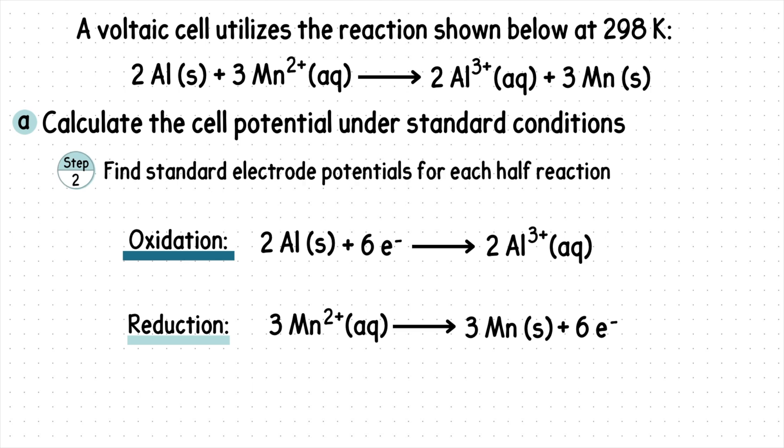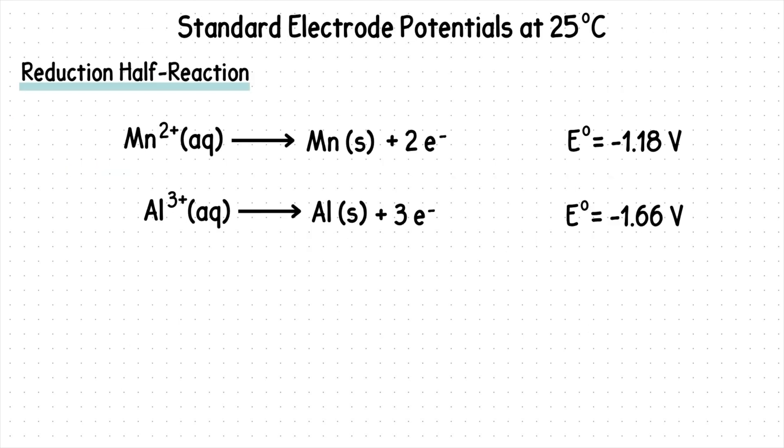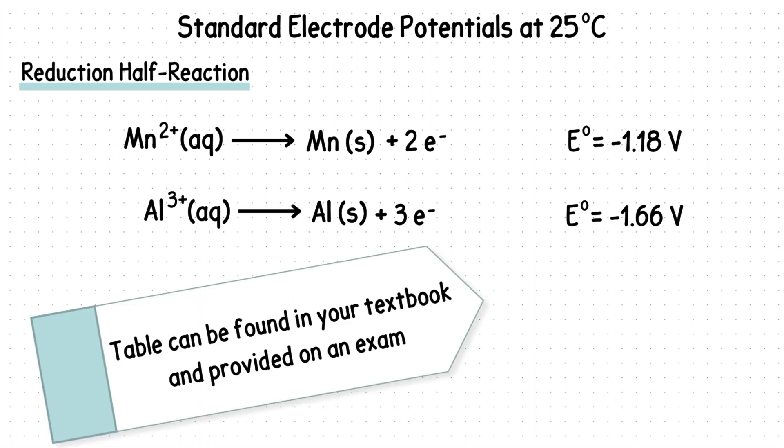Step 2. Find the standard electrode potentials for each half reaction. Here are our standard electrode potentials. And notice these half reactions only written as the reduction reactions. Note, this table can be found in your textbook and provided on an exam.